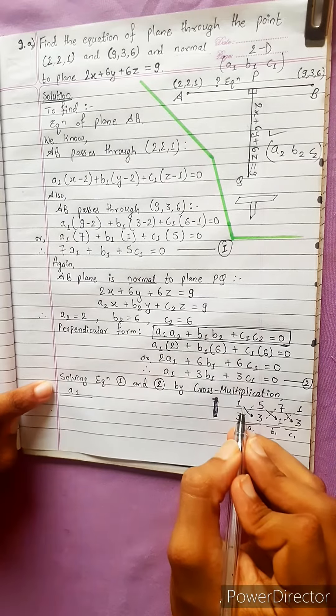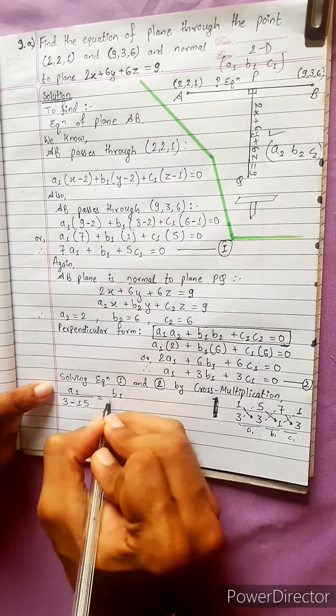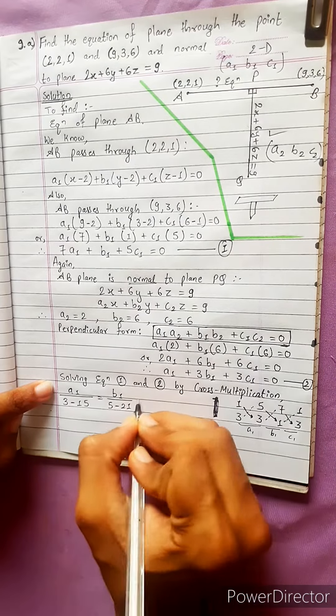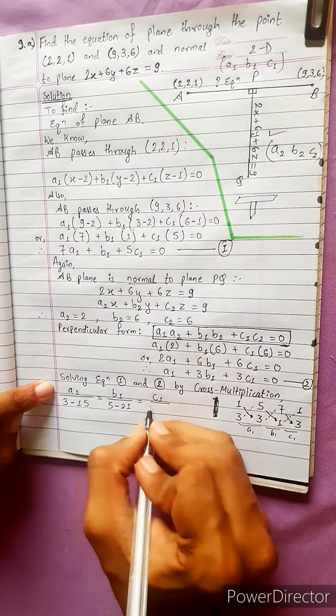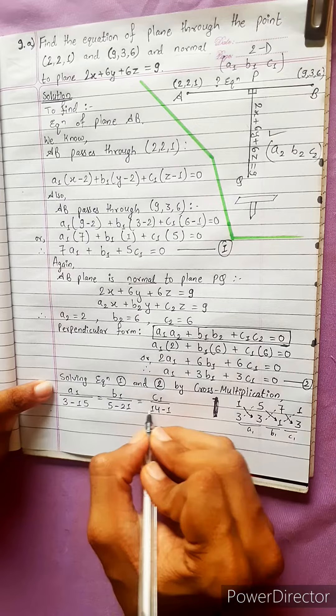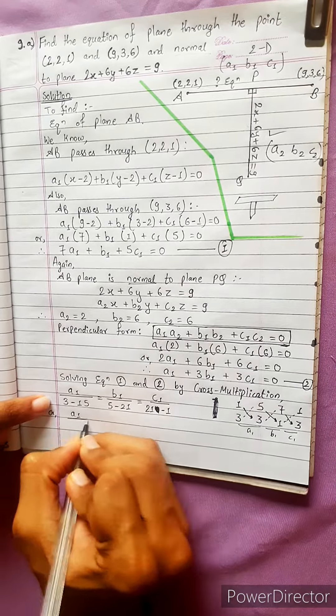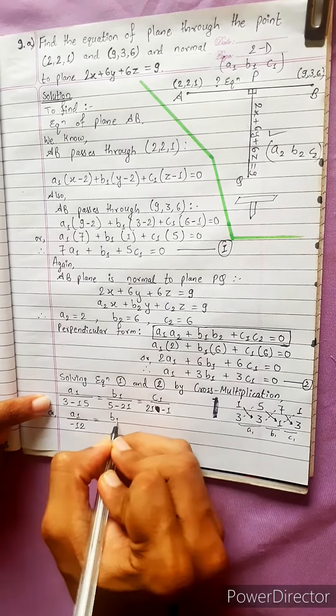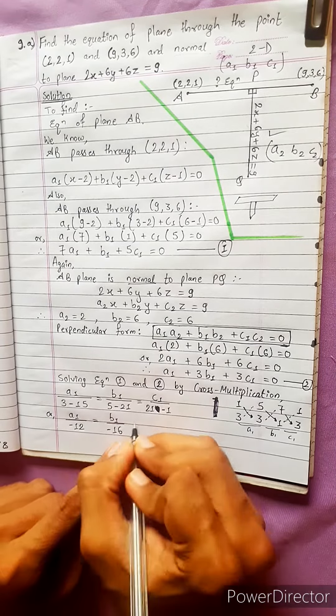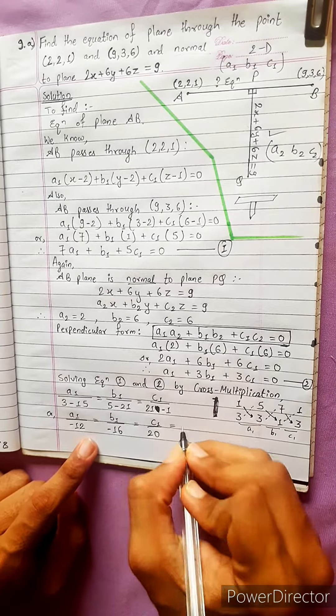A1 divided by 3 minus 15 equals B1 divided by 5 minus 21, equals C1 divided by 14 minus 1. A1 divided by minus 12 equals B1 divided by minus 16 equals C1 divided by 20.